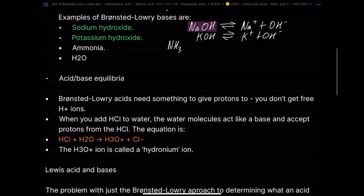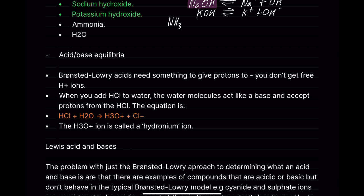Bronsted-Lowry acids need something to give protons to — you don't just give free H+ ions. So when you add HCl to water, the water molecules act as a base and accept protons from the HCl. The equation is: HCl + H2O → H3O+ + Cl−.